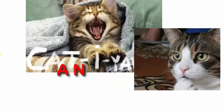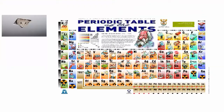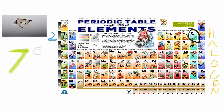Now, if you'll remember from our periodic table of elements, Fluorine is in period 2 of the halogen family, and it has 7 valence electrons, signified by that little hexagon right there. 1, 2, 3, 4, 5 — yeah, hexagon.